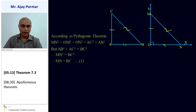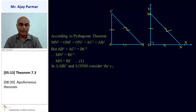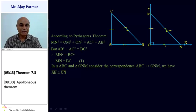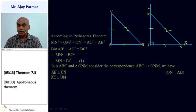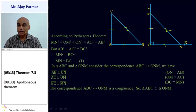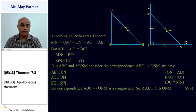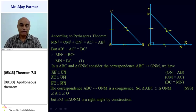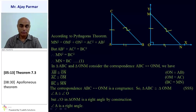Now we prove the two triangles are congruent. In triangle ABC and triangle ONM, considering correspondence ABC to ONM: AB is congruent to ON (by construction), AC is congruent to OM (by construction), and BC is congruent to MN (proved above). Therefore, triangle ABC corresponds to triangle ONM is a congruence by SSS. That means triangle ABC is congruent to triangle ONM, so measure of angle A equals measure of angle O. But we know angle O is a right angle, and therefore angle A is also a right angle. This proves the converse of Pythagoras theorem.